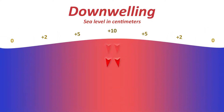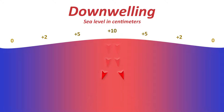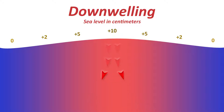Conversely, downwellings are areas of the surface of the ocean above sea level that indicate where sea level is falling. These are often nutrient-poor and don't support favorable fishing conditions.